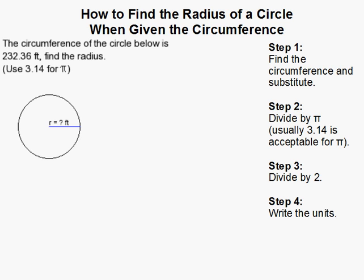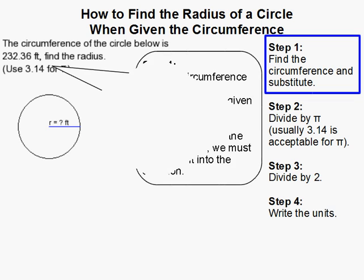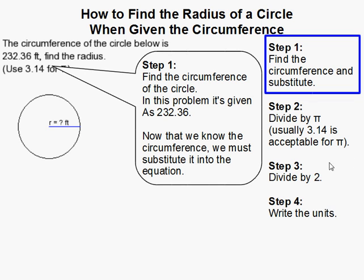How to find the radius of a circle when given the circumference. First you need to find the circumference. In this problem we are told that the circumference is 232.36 feet.